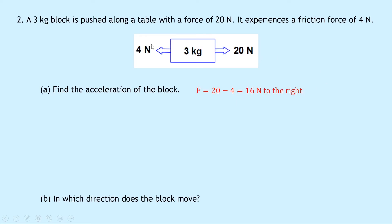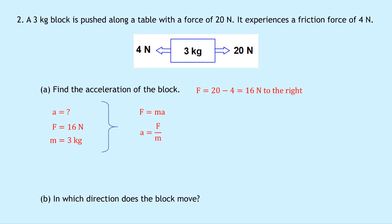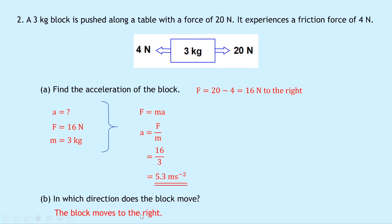We've got 20 Newtons to the right and four Newtons to the left, giving a result of 16 Newtons to the right. Writing down what we know: the unbalanced force is 16 Newtons and the mass is three kilograms. Using F equals MA, rearranging gives A equals F over M. Substituting: 16 divided by three gives 5.3 meters per second squared. Part B asks which direction the block moves — because the unbalanced force is 16 Newtons to the right, the block moves to the right.